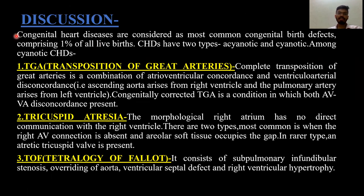Discussion. Congenital heart diseases are the most common congenital birth defects, comprising around 1% of all live births, with two types: acyanotic and cyanotic. Among cyanotic types, TGA — transposition of great arteries — occurs due to a combination of atrioventricular concordance and ventriculo-arterial discordance, meaning the ascending aorta arises from the right ventricle and the pulmonary artery arises from the left ventricle. Congenitally corrected TGA is a condition in which both AV and VA discordance are present.